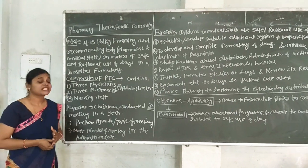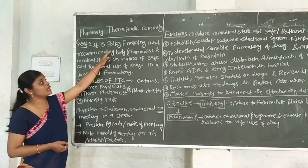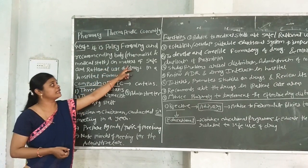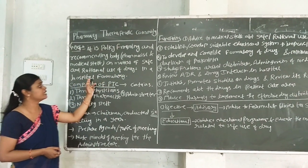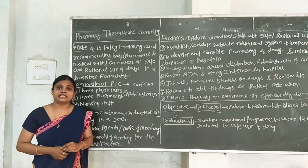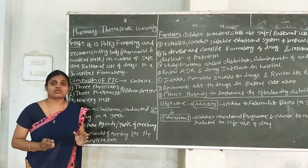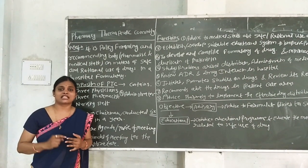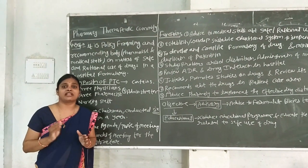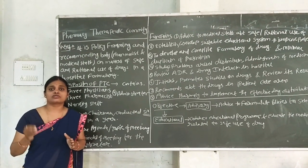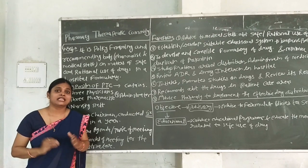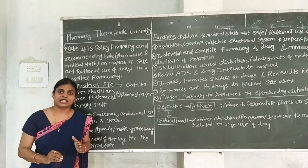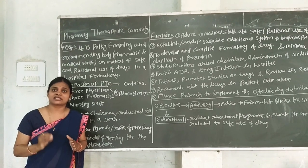Start with the definition. The PTC is a policy framing and determining body, including components of pharmacists and medical staff, on matters of safe and rational use of drugs in a hospital. Pharmacists and medical staff — physicians and nurses — frame and recommend particular drugs which are in the hospital.